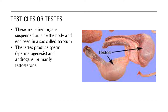The testes and their counterpart in the female — the ovary — are similar in that they both contain gametes. For the male, it is the male gamete or the sperm. For the female, the ovary contains the female gamete or the egg cell. The testes can be a component of both the reproductive system, because it produces sperm, and the endocrine system, since it can secrete hormones. The testes produce sperm through spermatogenesis, as well as androgens, primarily testosterone.